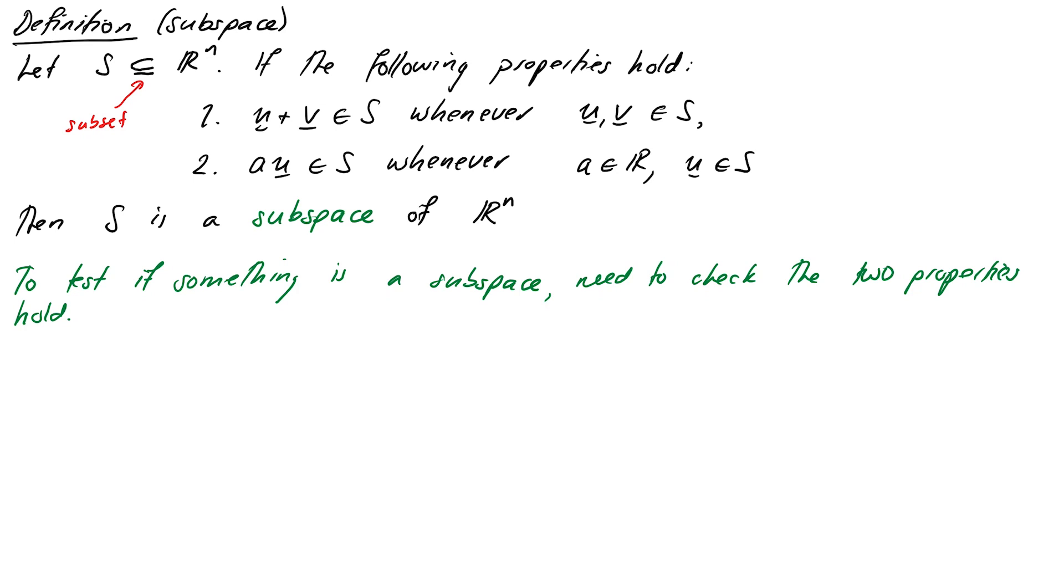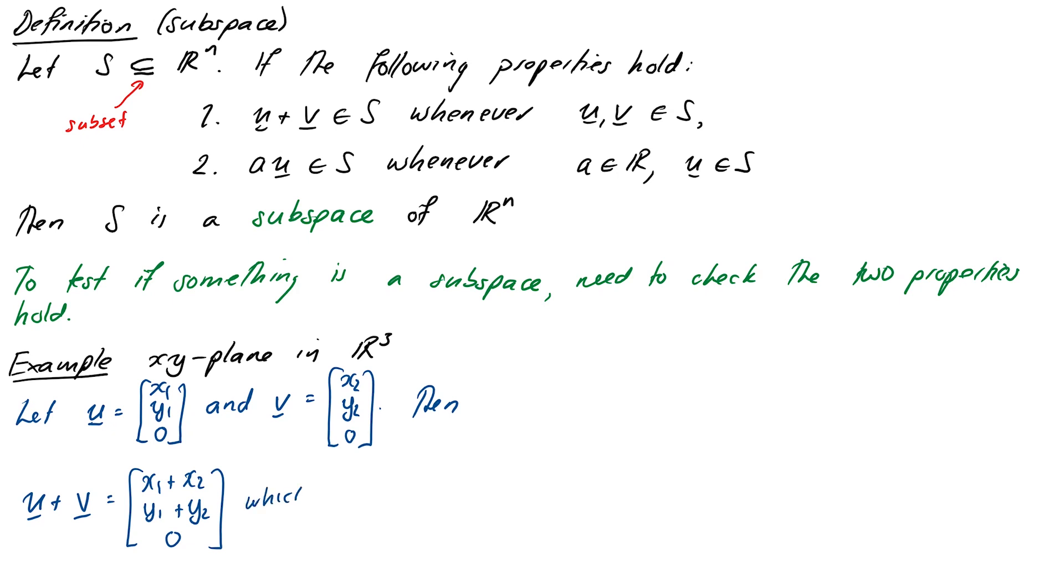In order to test that something is a subspace, we need to check that the two properties both hold for it. We'll start with the xy plane in R3 that we just looked at before. Let's check the first property. We need a way of picking two arbitrary vectors on the plane. So let U be (x1, y1, 0), hopefully you're comfortable that's a vector on the xy plane, and V will be a possibly different one, (x2, y2, 0). Then what we have to do is add them up and show that our result is still in the same form. So U plus V is just going to be (x1 + x2, y1 + y2, 0), and that is quite clearly also a vector on the xy plane.